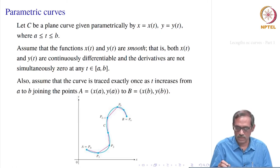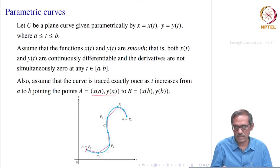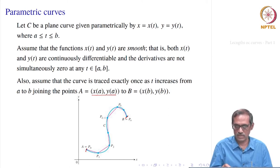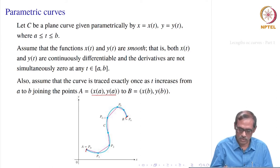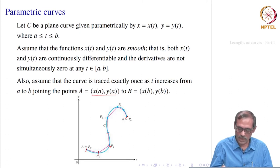With this assumption, let us look at the curve and find its length. When t equal to a, we have the point x of a, y of a — the beginning point. And b is the end point, which we write as x of b, y of b. The curve is traced in blue here. To approximate this length, we choose many points on the curve, and any small portion of the curve is approximated by a straight line segment joining those two points, say p1 and p2.